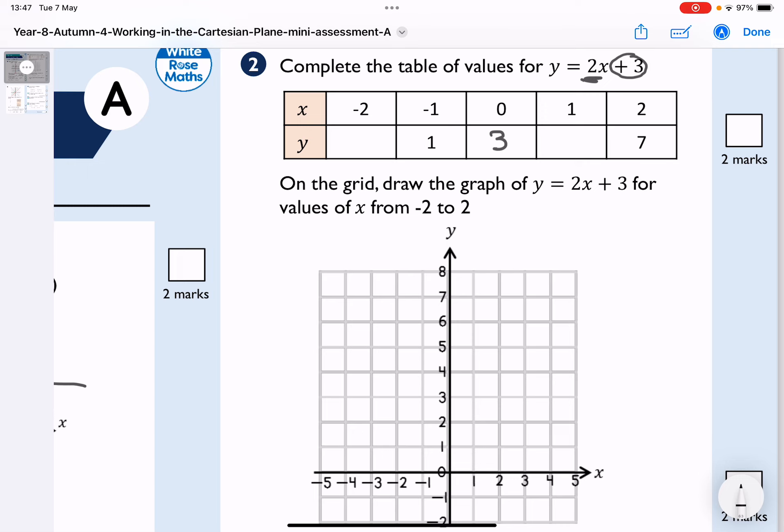This is a straight line because it fits y equals mx plus c. And that 2 tells me that the gradient is 2.